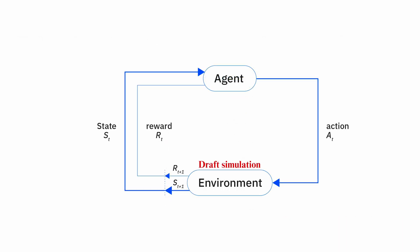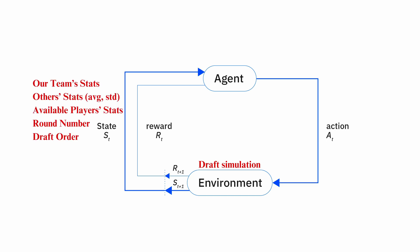So how does reinforcement learning work in my draft simulator? The environment is the draft, where 10 teams take turns picking players in 23 rounds under the snake order. The state is what my team stats are, what the other teams' stats are, what players are available, what round it is, and what my draft order is. The agent learns from experience — it tries different strategies in different scenarios and updates its model to get better at winning. It can choose one of the three proven strategies: S1, S2, or S4 based on the current situation.